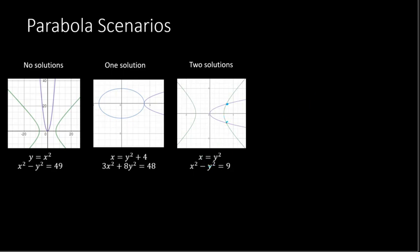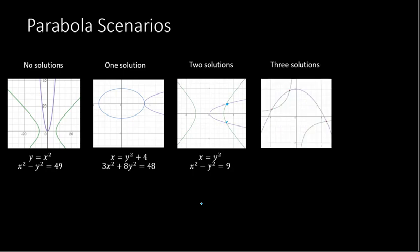The equations that would create that graph are right here. It could be no solution, one solution, two solutions, and it could also be three or four solutions. For three solutions, you could have an upside-down parabola and a hyperbola crossing at three different spots, and the equations representing those graphs are given here.